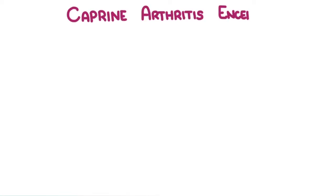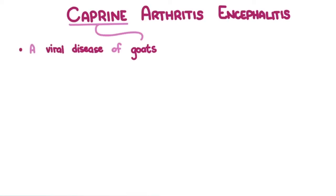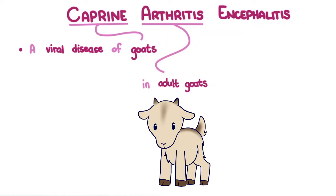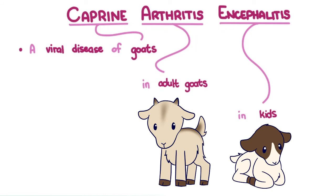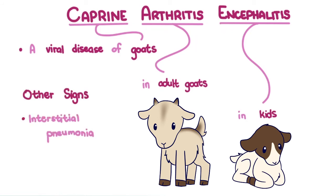Caprine arthritis encephalitis is a viral disease of goats that manifests as two principal disease syndromes: arthritis in adult goats and encephalitis, more specifically leucoencephalomyelitis, in kids. Other signs associated with it are interstitial pneumonia and indurative mastitis.